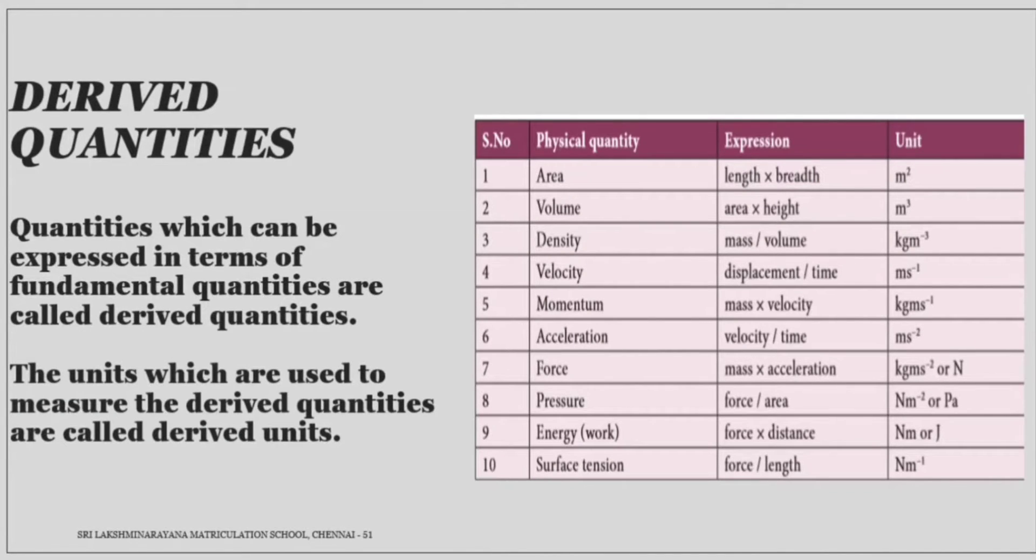Next, derived quantities. Quantities which can be expressed in terms of fundamental quantities are called derived quantities. The units which are used to measure the derived quantities are called derived units. Some of the physical quantity and the expression and units are given in the table.